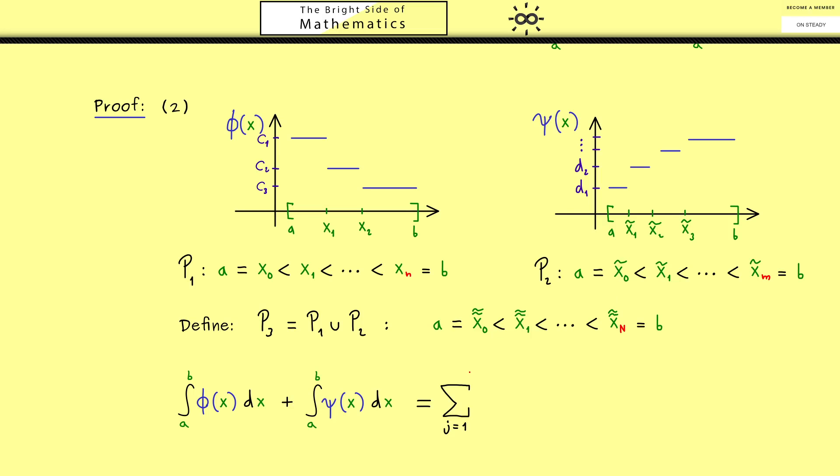If we want to calculate the first integral we have the sum j equals 1 until we reach capital N. Then inside the sum we have the value cⱼ times the difference of the points. Maybe the enumeration of the value cⱼ has changed because we added more points. However, the possible numbers that could come out don't change at all. Therefore for the new partition P₃ we call them cⱼ again. In a similar way we get the same result for the integral of ψ. The sum looks similarly but now we use the values dⱼ.